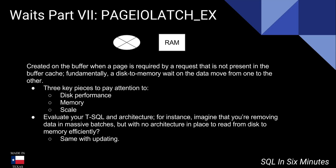Essentially what this is — you'll notice that I flip the disk and the RAM there — it's created on the buffer when a page is required by a request that is not present in the buffer cache. Fundamentally, this is your disk-to-memory wait on the data move from one to the other.